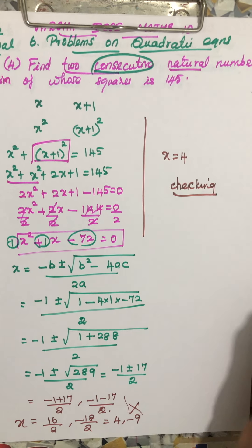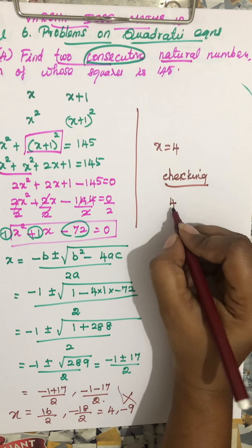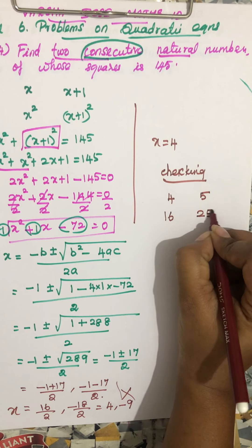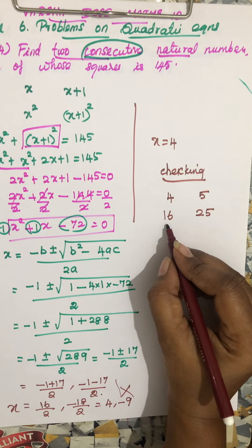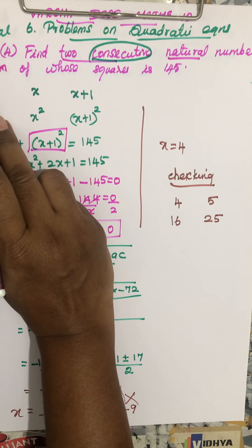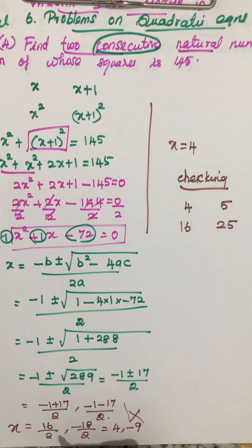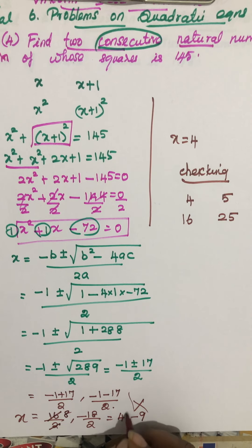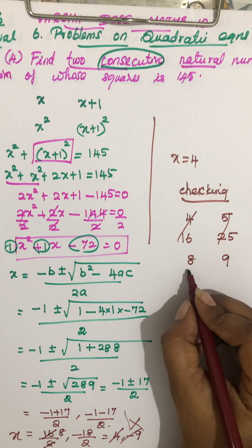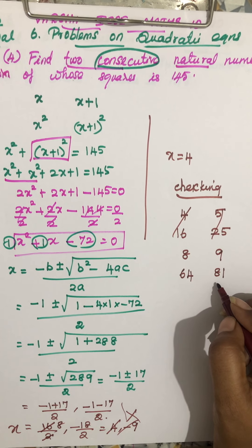Let's check our answer. The two consecutive numbers are x equals 8 and x plus 1 equals 9. Sorry students — I had initially said 4, but 16 divided by 2 is 8, not 4. So the correct answer is x equals 8 and the next number is 9. Eight squared is 64 and nine squared is 81.